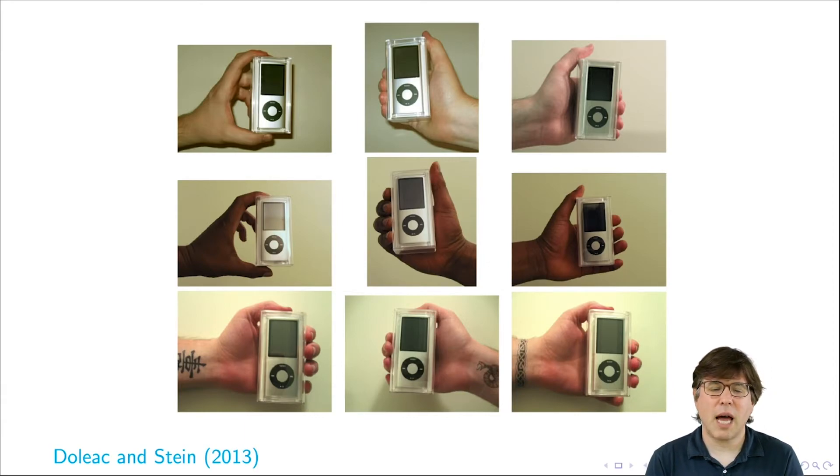So they sold iPods on Craigslist and they varied the hand that was holding it in the picture. So the hand was either white, black or white with a tattoo. And then they compared, for example, the probability that a sale would occur and the sale price as a function of this characteristics of the seller.